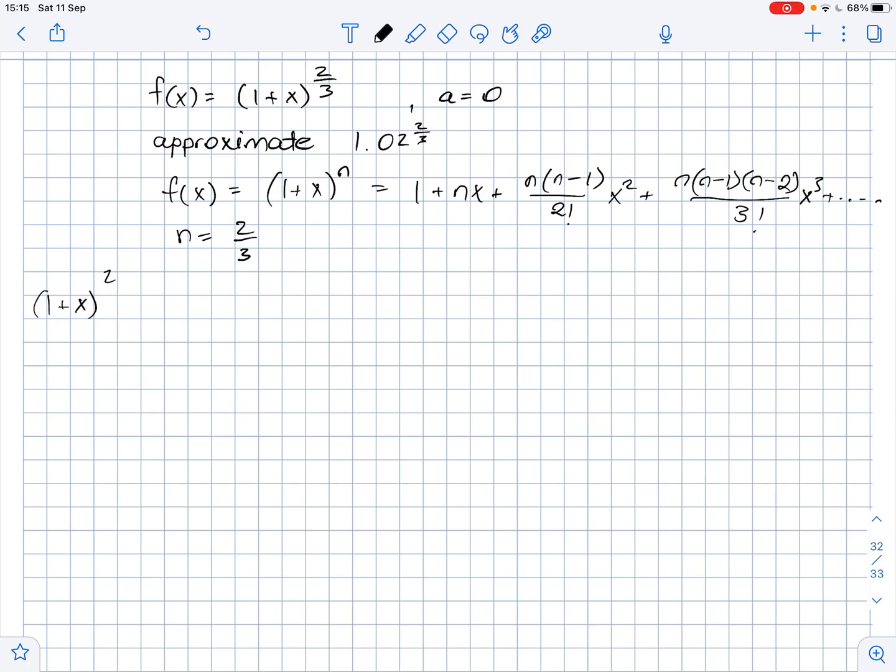So we get that (1 + x) to the power of 2/3 equals 1 + (2/3)x + (2/3)(2/3 - 1)(1/2)x squared plus (2/3)(2/3 - 1)(2/3 - 2)(1/6)x cubed and so on. Let's simplify it.